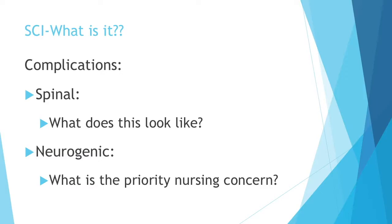Spinal shock is when we have a sudden depression of reflex activity below the spinal injury. It usually presents as muscular flaccidity and a lack of sensation and reflexes. So they might have had a spinal cord injury and been fine, then go into spinal shock — automatically losing rigidity in their muscles and all reflexes below that lesion.